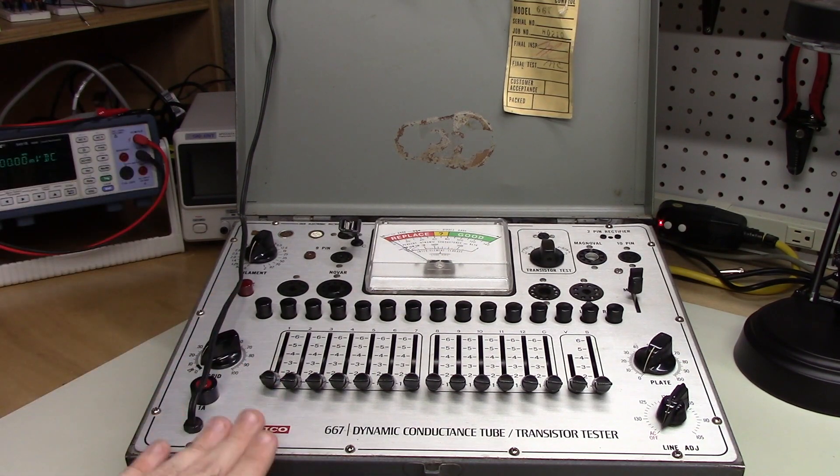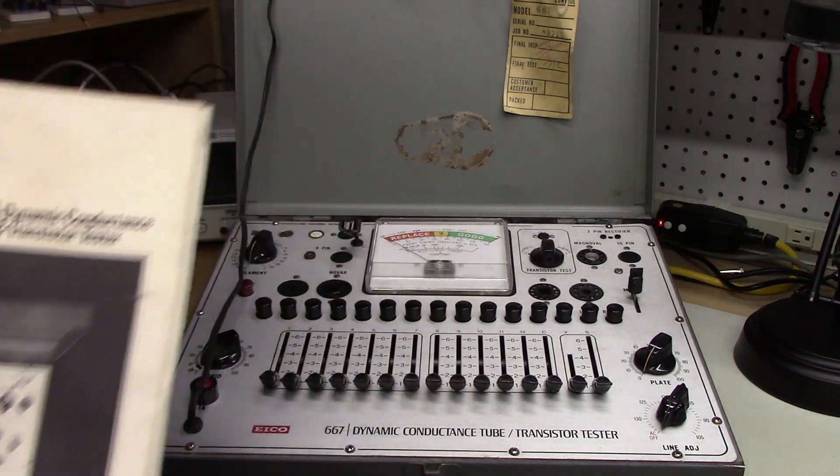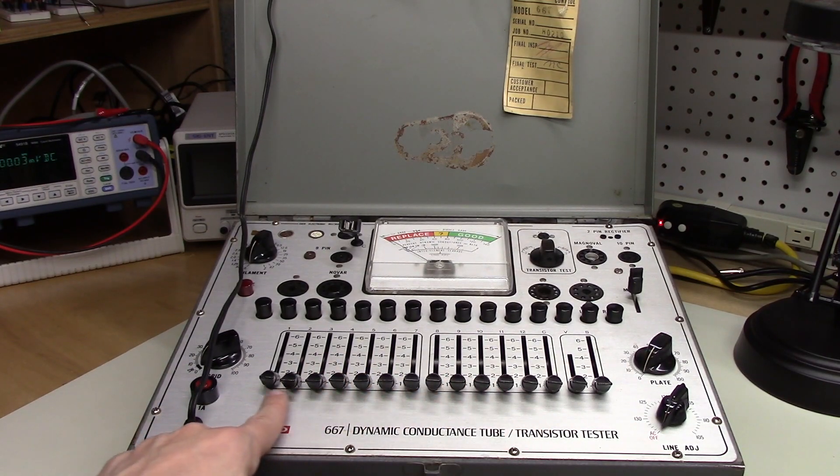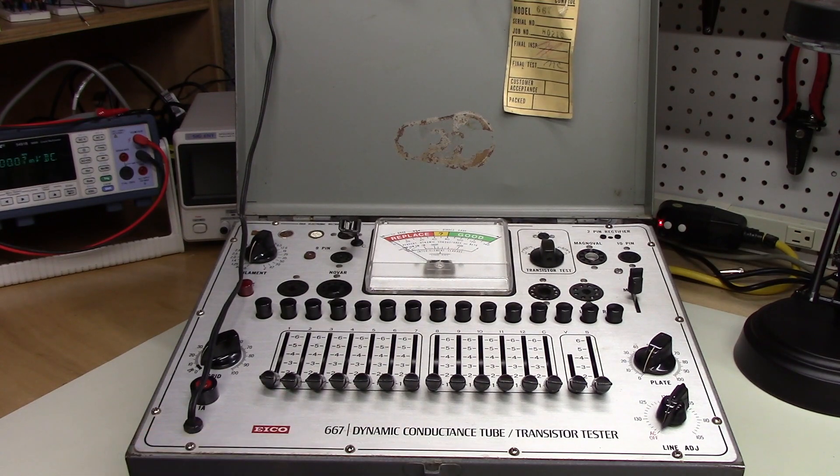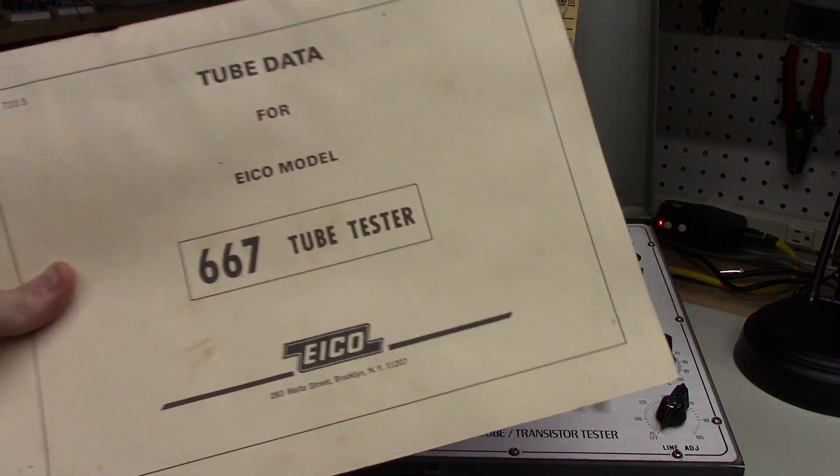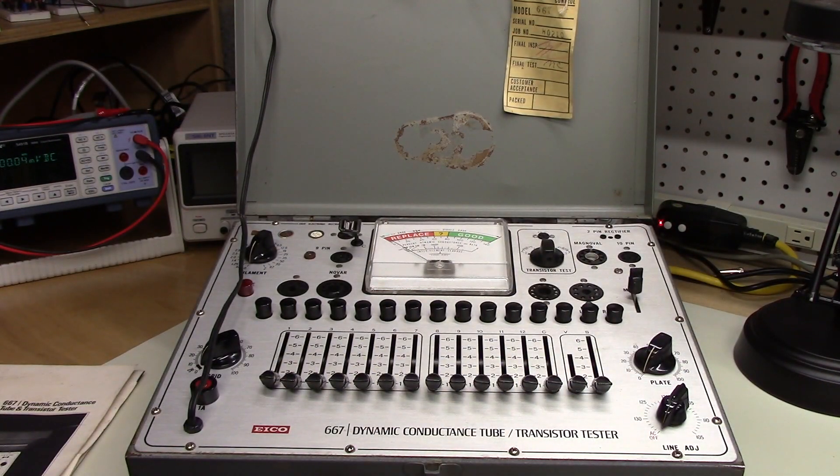I'm going to pull this off here in just a moment. It came with a manual. This is the version of the 667 that does not have an internal roll chart. The data for the different tubes is available in a booklet format.